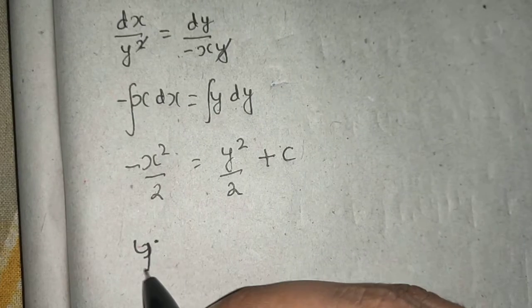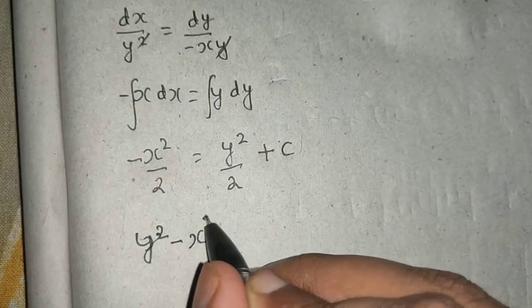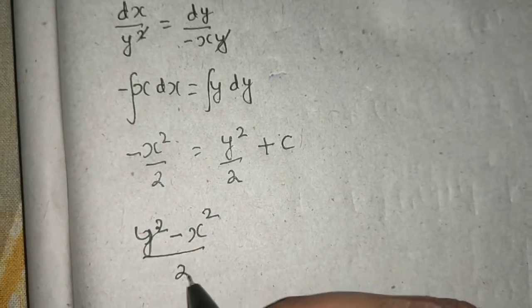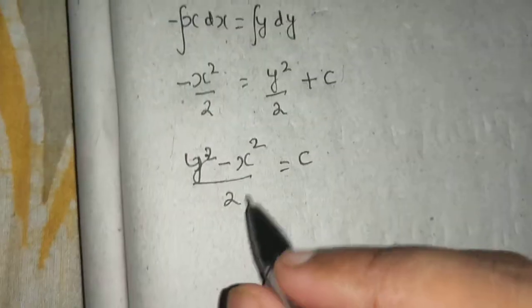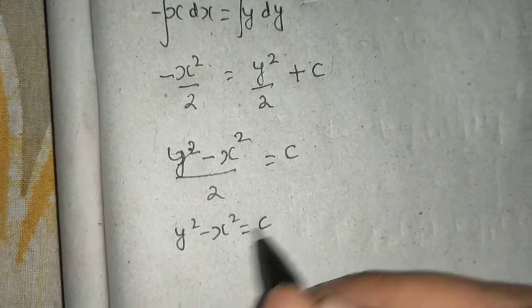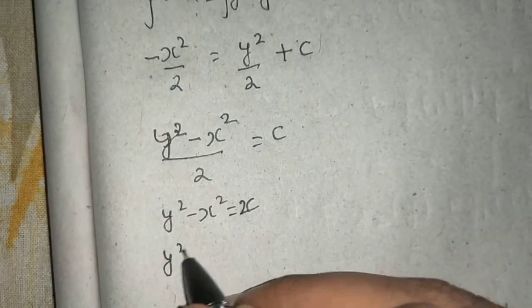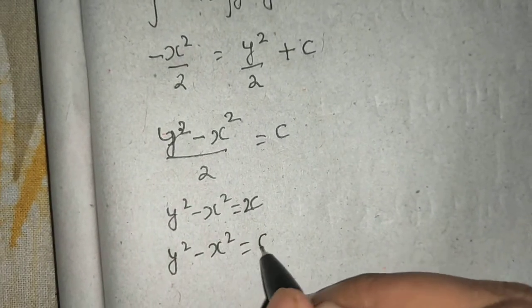So you will get y² - x²/2 = c, or you can send this 2 to that side so y² - x² = c₁. Twice c you can name as another constant.